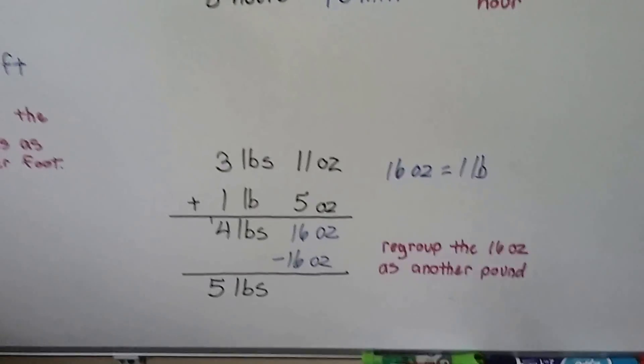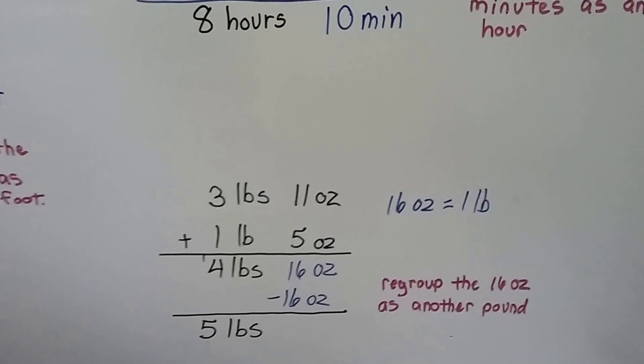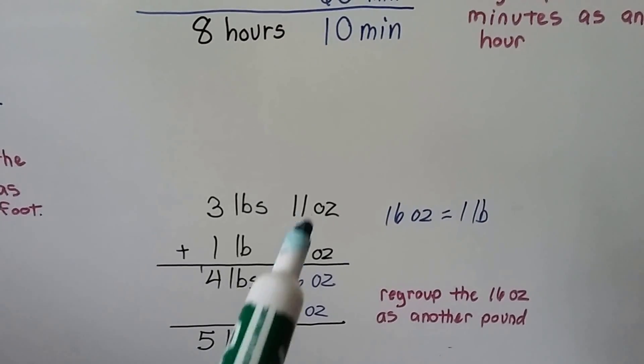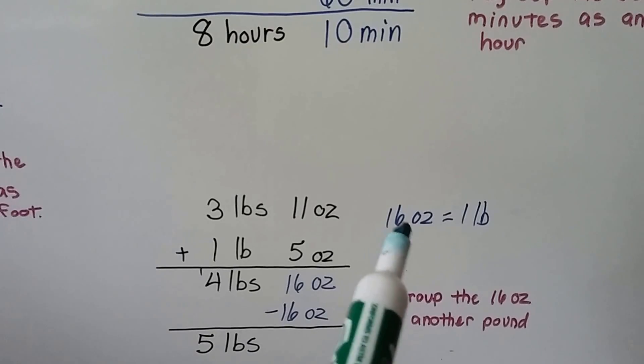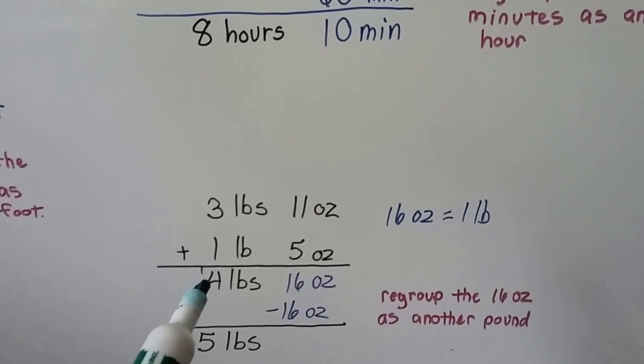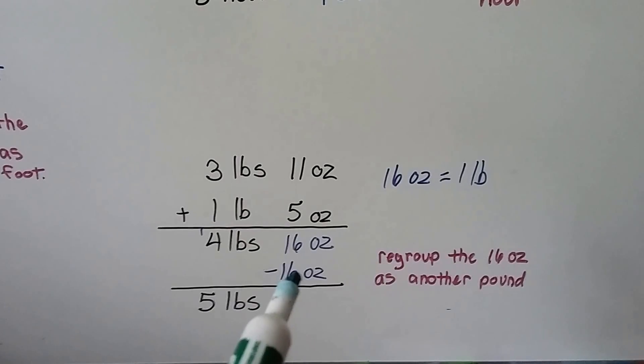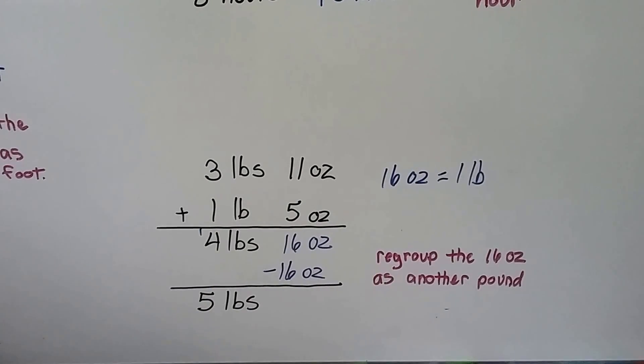Let's try it with some ounces and a pound. We've got 3 pounds 11 ounces and 1 pound 5 ounces. When we add them together, this 11 ounces and this 5 ounces makes 16 ounces. Well, 16 ounces equals 1 pound, and 3 pounds and 1 pound makes 4 pounds. We can actually regroup this entire 16 ounces as a pound. We have 5 pounds even.